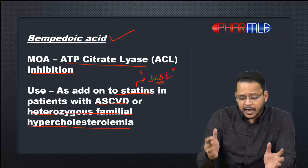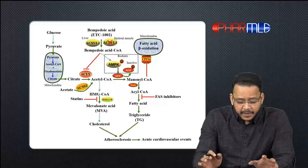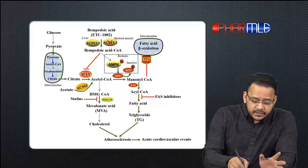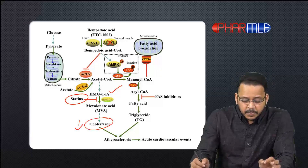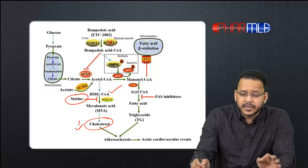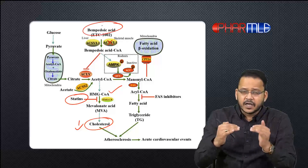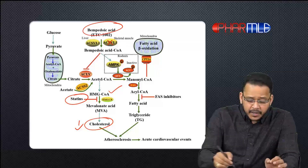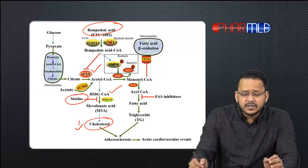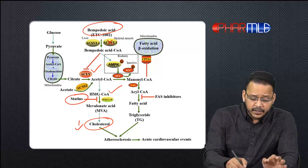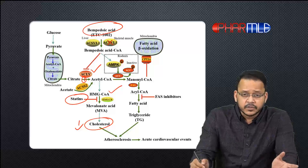Let us look at the mechanism of action. In this diagram, statins decrease cholesterol synthesis by blocking HMG-CoA reductase, which is the rate-limiting step for cholesterol synthesis. Bempedoic acid acts at a level higher on the synthesis of cholesterol by inhibiting an enzyme called ATP citrate lyase (ACL), which blocks the synthesis of acetyl-CoA and thus the synthesis of cholesterol.